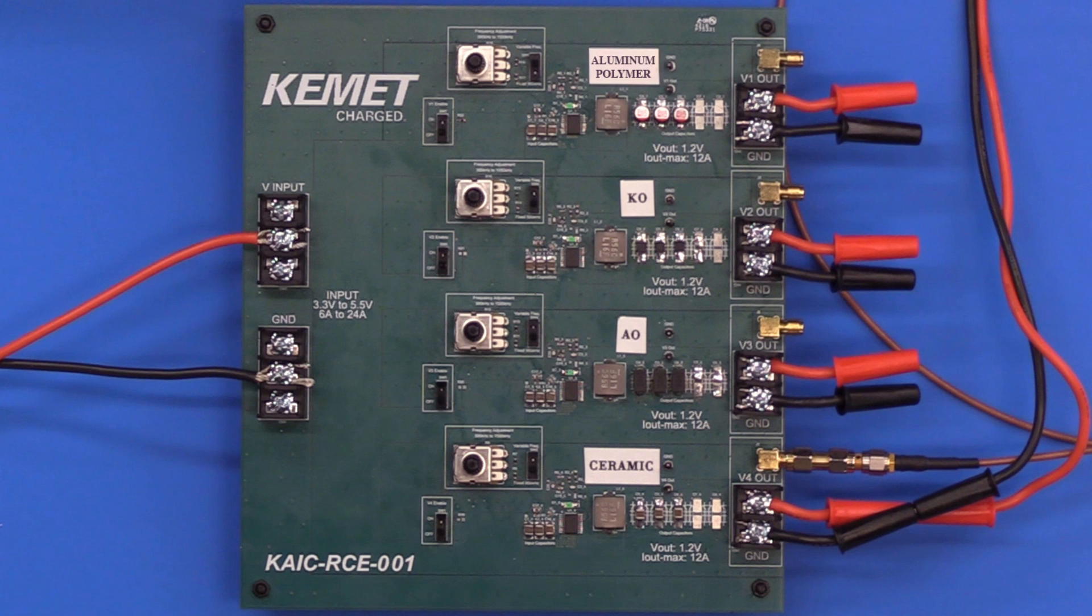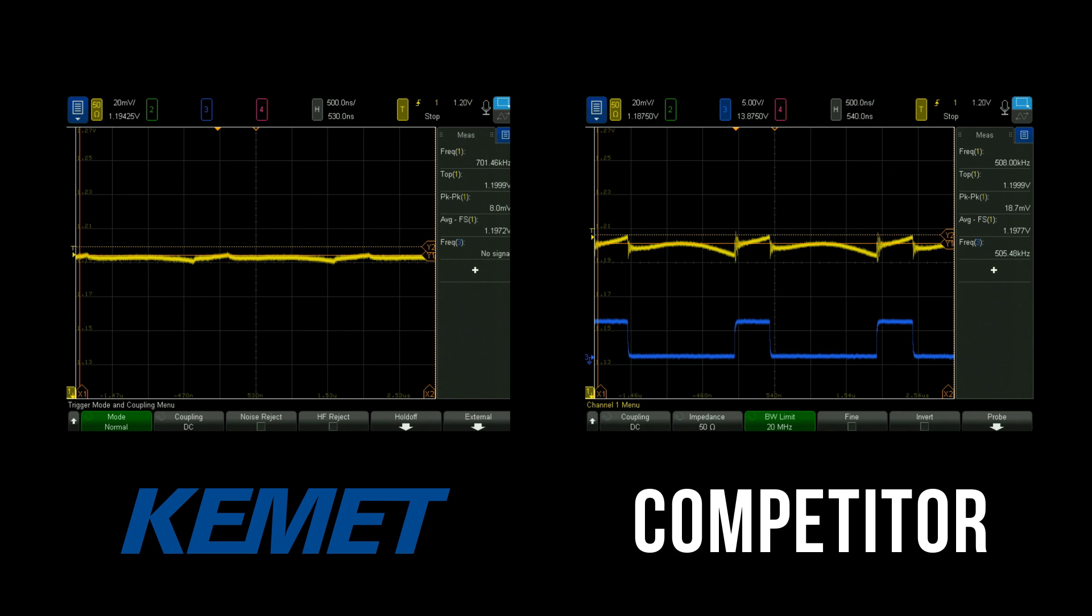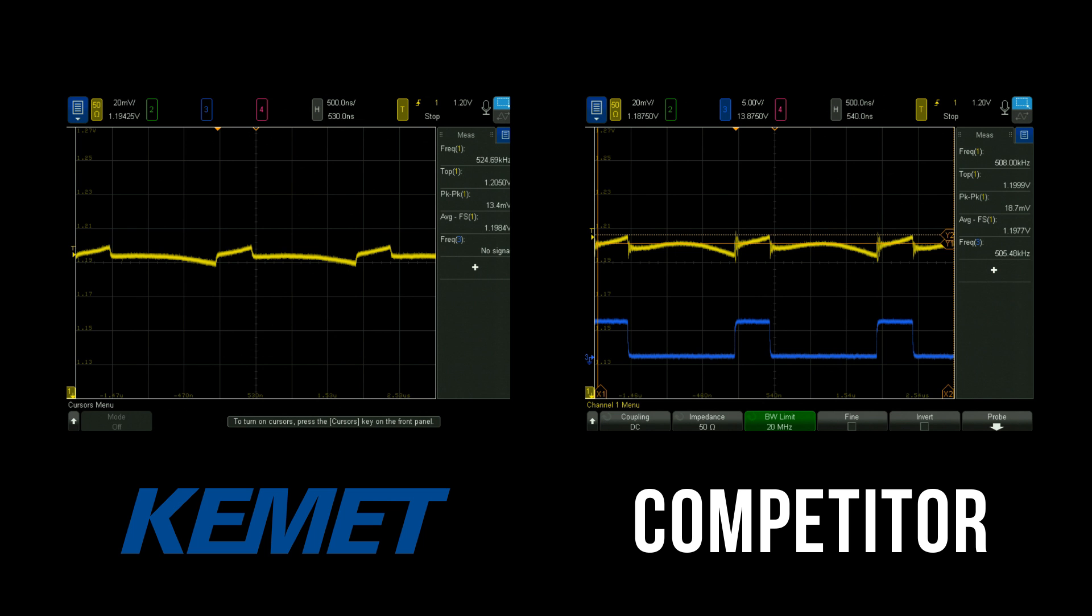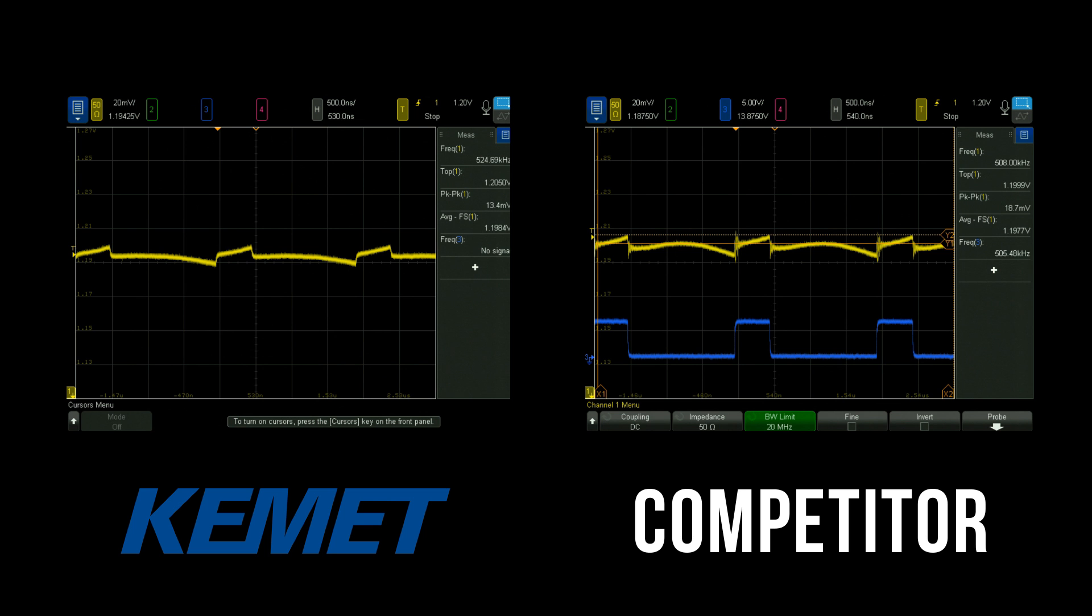The KEMET ceramics gave us the best performance with an 8 millivolt peak-to-peak ripple which is a 50% reduction in ripple voltage as compared to the competitor's ceramic capacitors used in the TI evaluation board. The AO cap had 19% ripple voltage reduction versus the competitor's ceramic capacitors which makes it a good alternative for ceramic replacement if the ceramic capacitor shortage is giving you trouble.